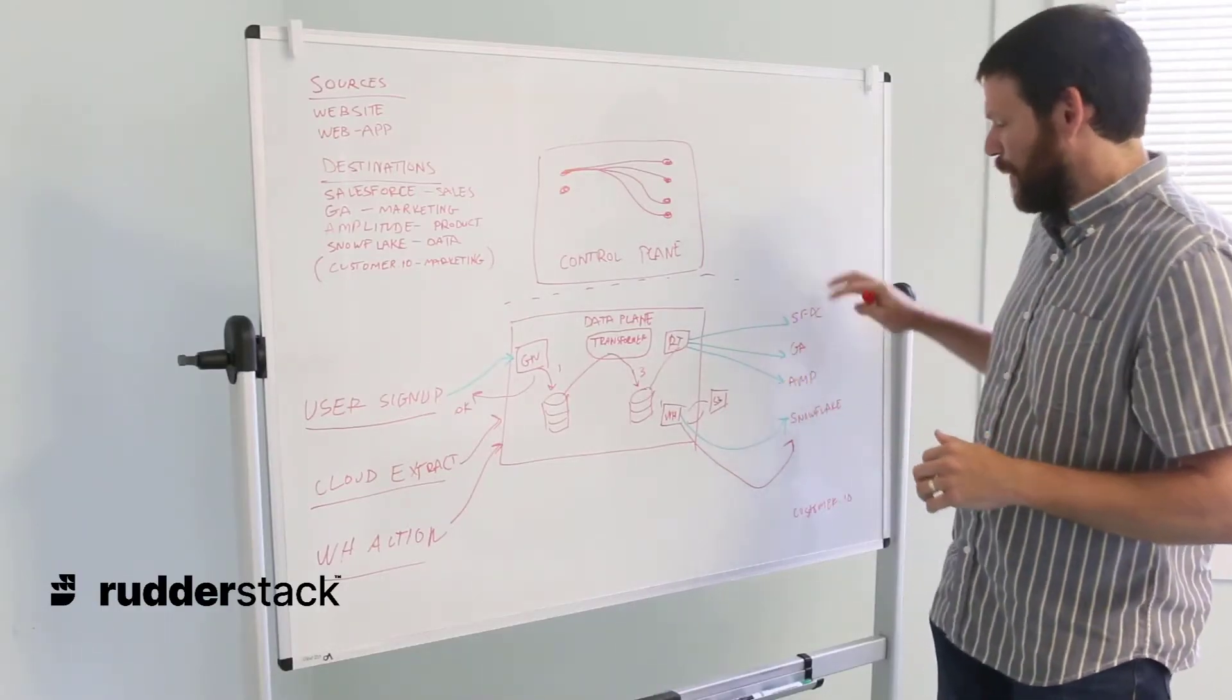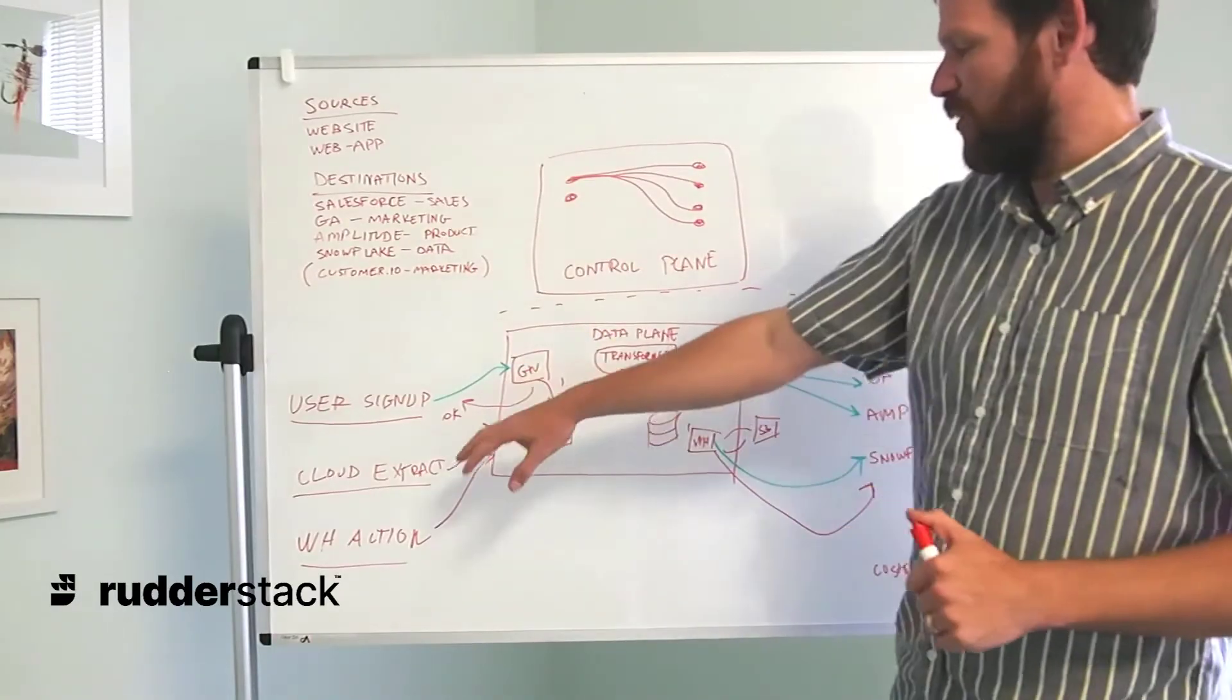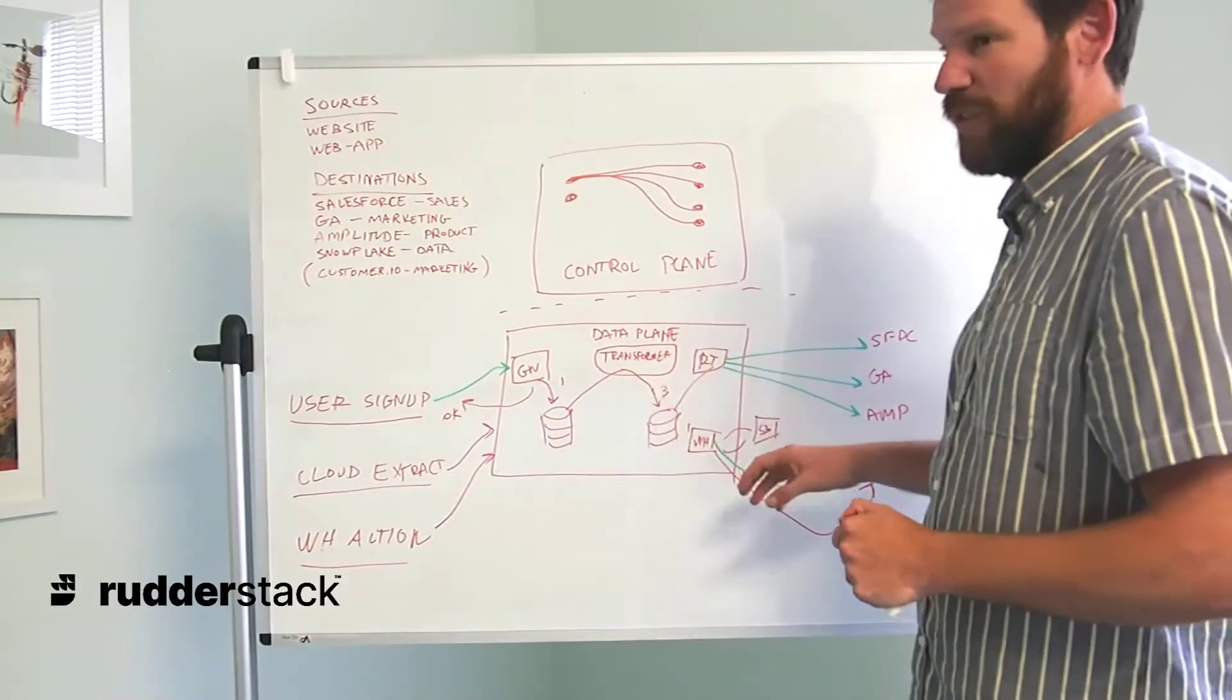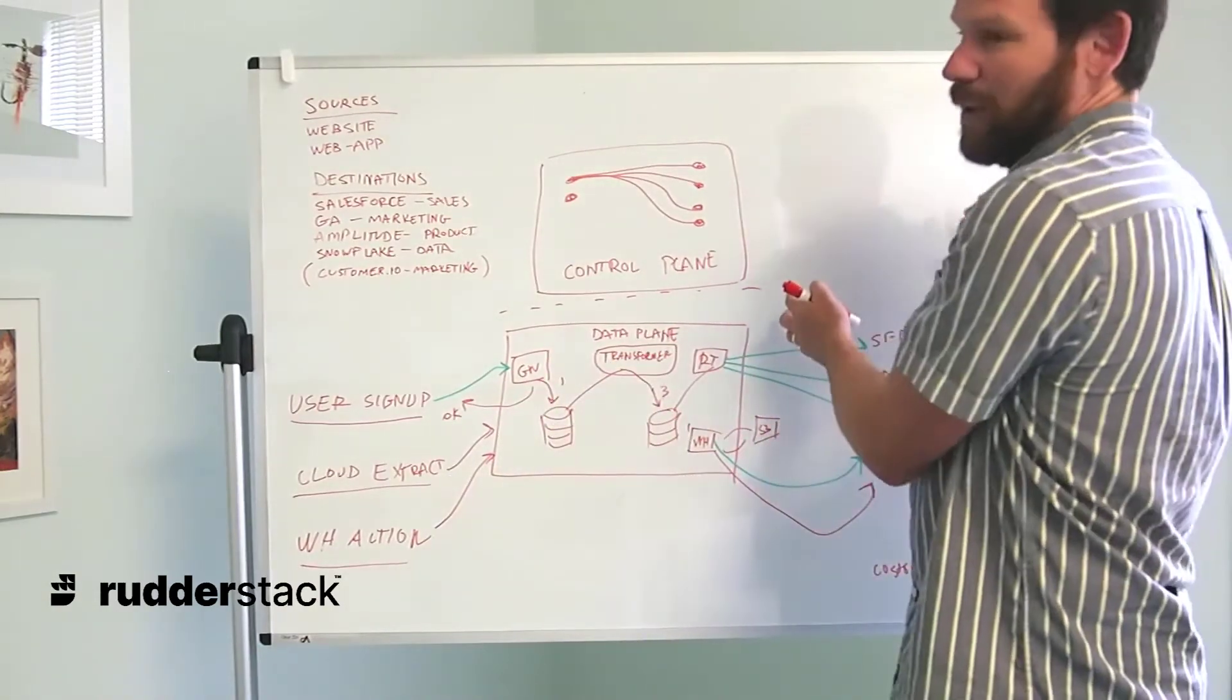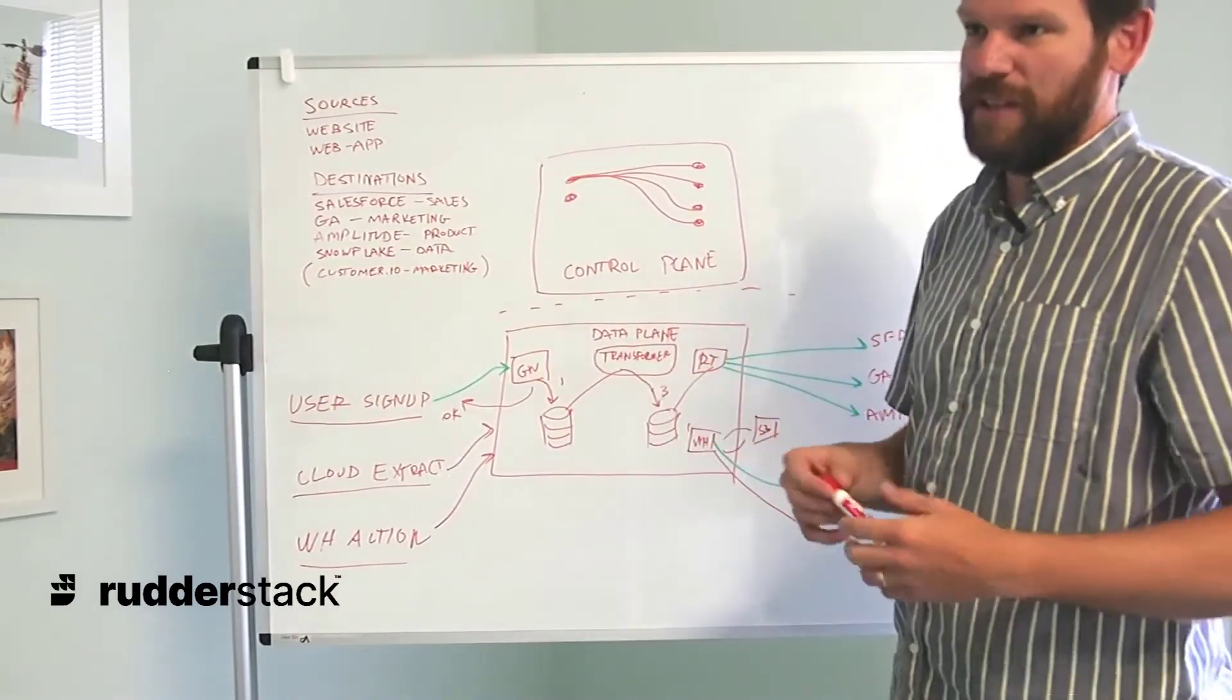A lot of times this will be a master user's table created from all of our event stream data that's been enriched with cloud extract sources. We can create a golden record of our users and pipe that data back through into our downstream tools to make sure everything's in sync.